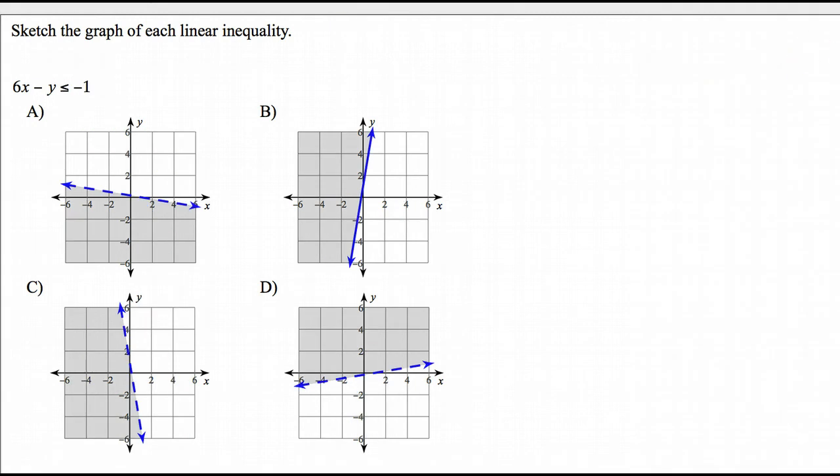This is a good example. So in this one, 6X minus Y is less than or equal to negative 1. I can make a note to myself that it's solid, which makes this question really easy. But once again, it's about method more than anything else. I need to get Y by itself. So 6X is on the same side. Just because there's a minus here doesn't mean to get rid of 6X you add.